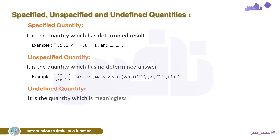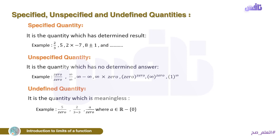Now let's define the undefined quantity. An undefined quantity is a quantity which is meaningless. There is a difference between indeterminate and undefined. Undefined means something over zero — dividing by zero is meaningless. For example, 5 over 0 is undefined. 2 over (3 minus 3) is undefined. A over zero is undefined, where A is any number except zero. Because if it were zero over zero, it would be an indeterminate quantity — that is a different case.